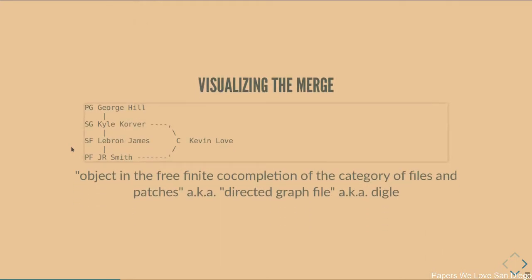If we think about a file as a series of functions, first you start with an empty file, then you add a single line. That first addition would be George Hill. That's now the root of the next edition — Kyle Korver. From there, we have a branching of two different possibilities: either add LeBron James or add Kevin Love. LeBron James and Kevin Love both have a common ancestor, and they would have a common descendant — J.R. Smith. If we think about it in these terms, we can start to move towards a more mathematical understanding.